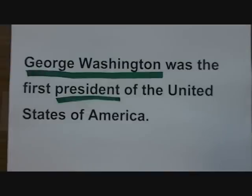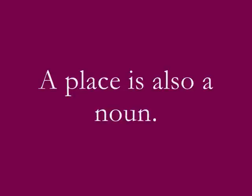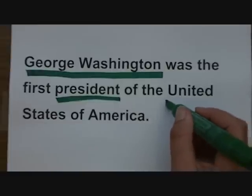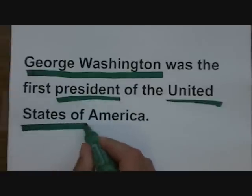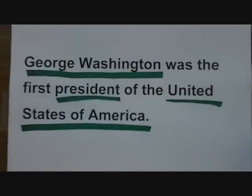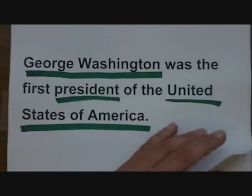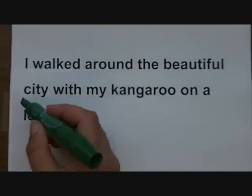A noun is a person, a place, a thing, or an idea. We've talked about person — let's talk about place. A place is also a noun. The United States of America is a place. Because it's a specific place, we call it a proper noun — still a noun. Here's another example: I walked around the beautiful city with my kangaroo on a leash. City is also a place. Because it's not named, we call it a common noun, but it's still a noun.